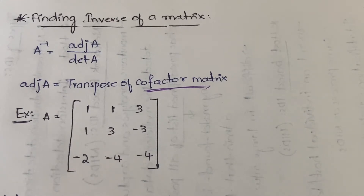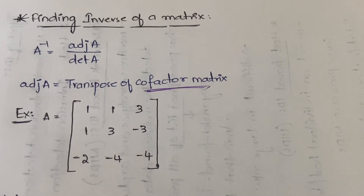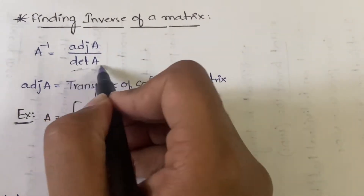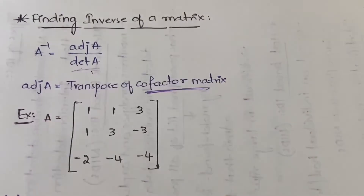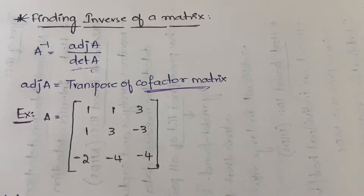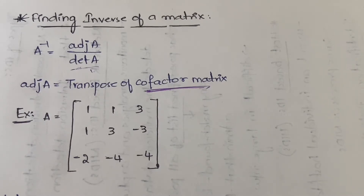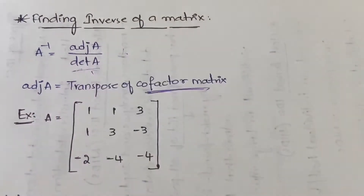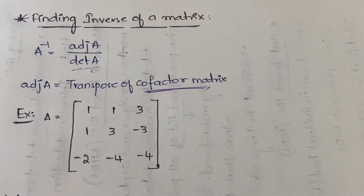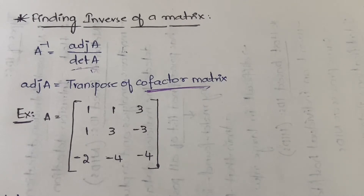Before starting the process, you have to check one thing — whether A inverse will exist or not for this matrix. First, you need to calculate det(A). If the determinant is equal to 0, then A inverse will not exist, because the denominator becomes 0. So det(A) not equal to 0 is required for A inverse to exist.